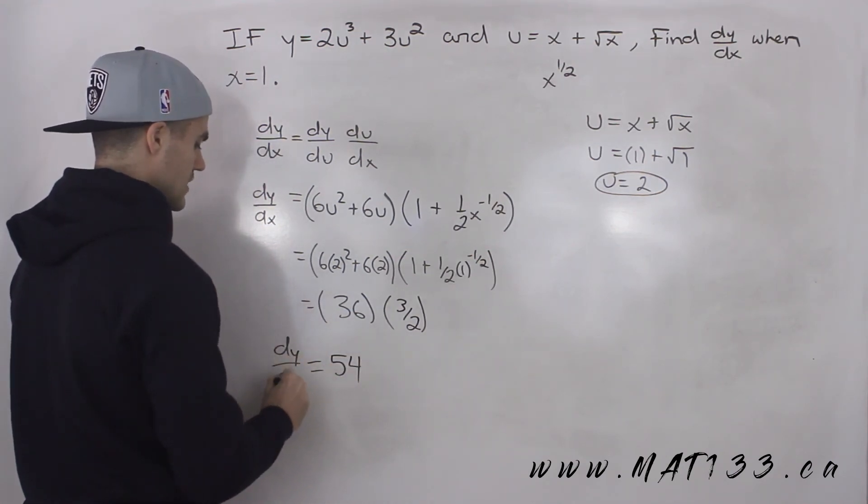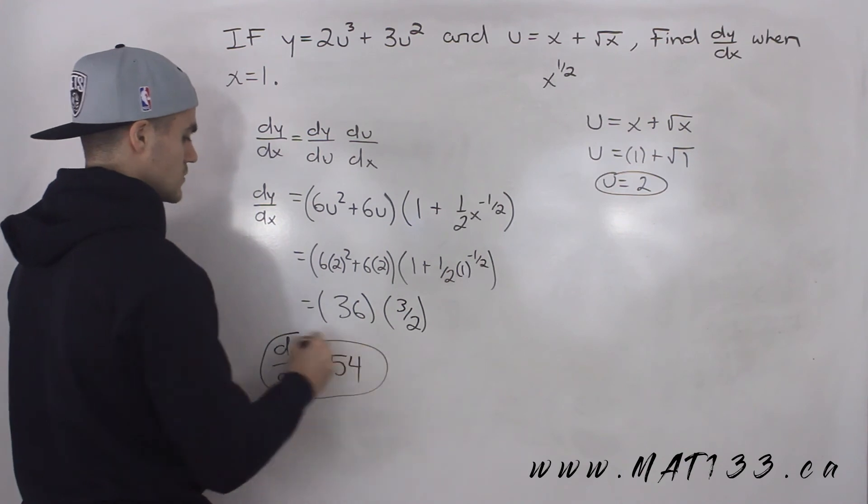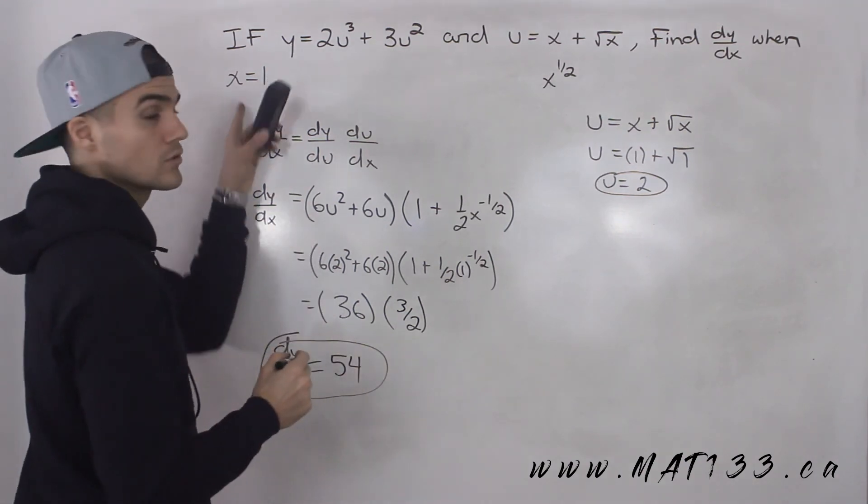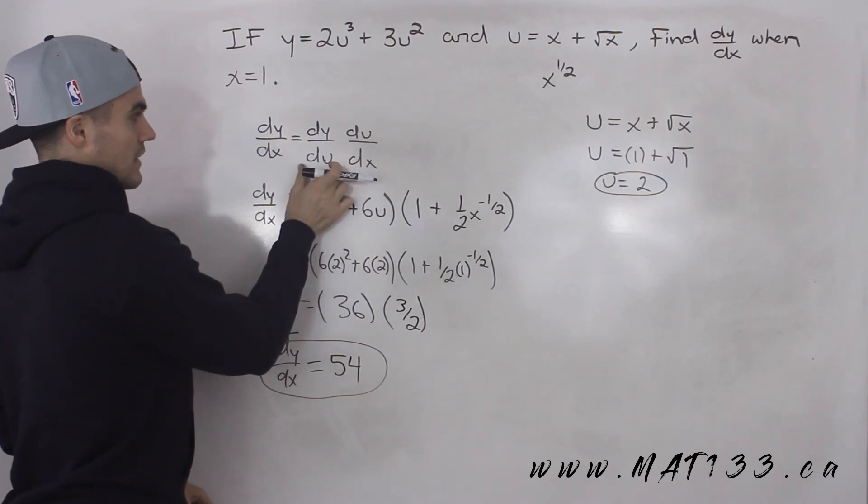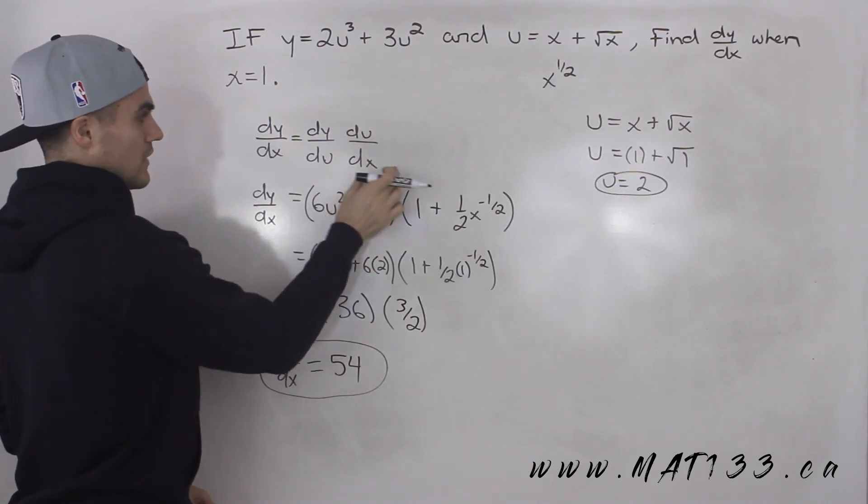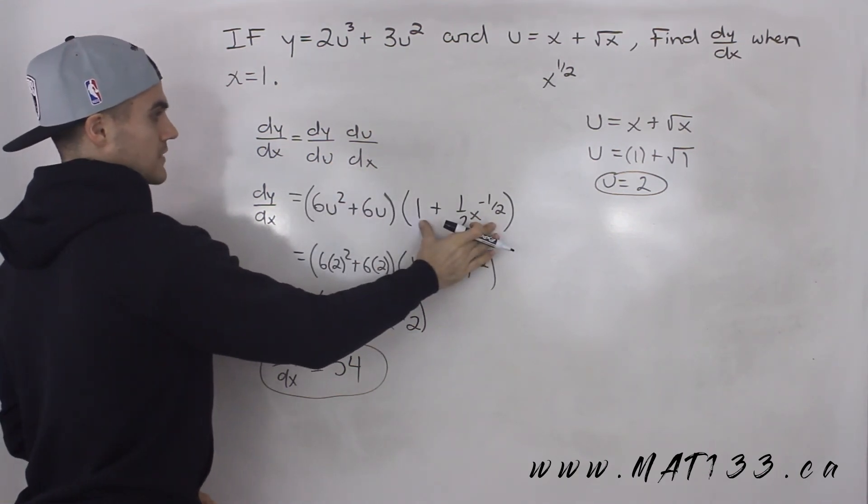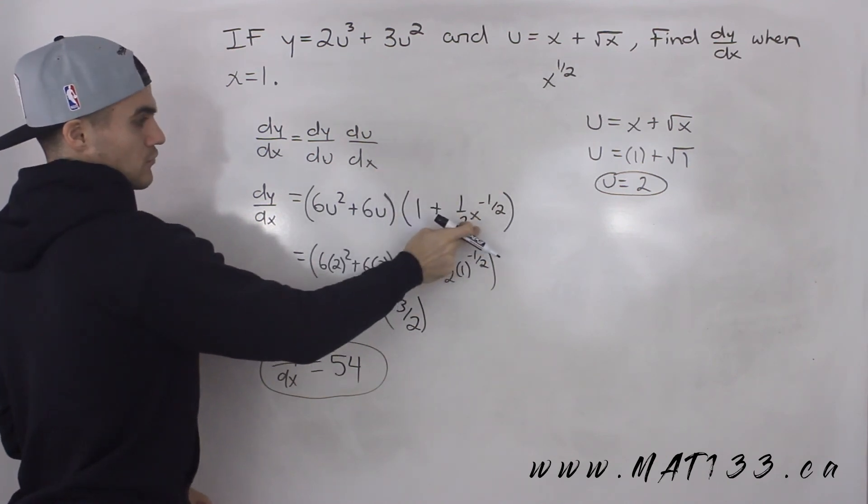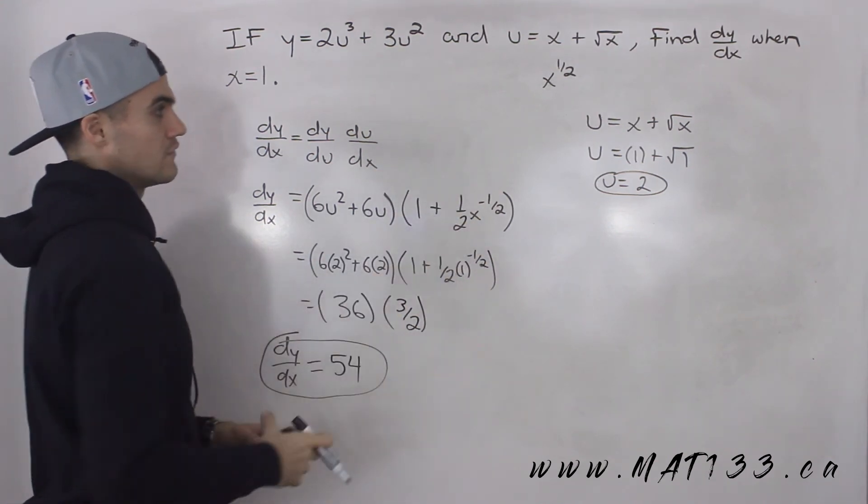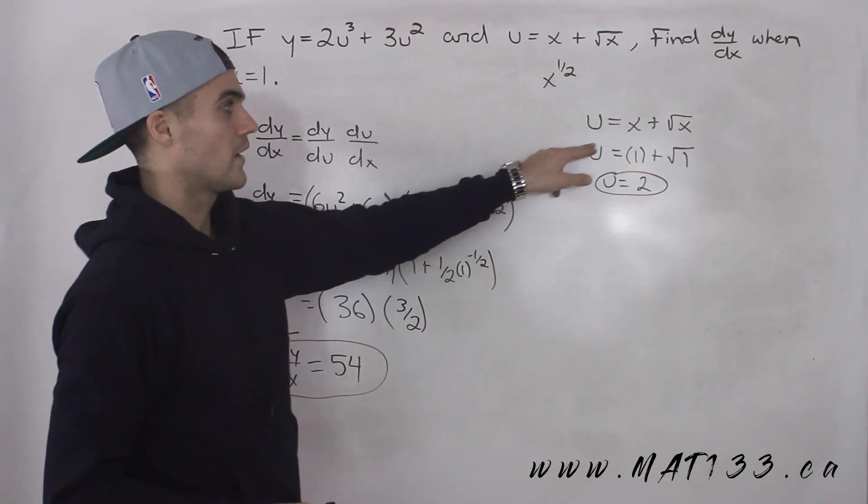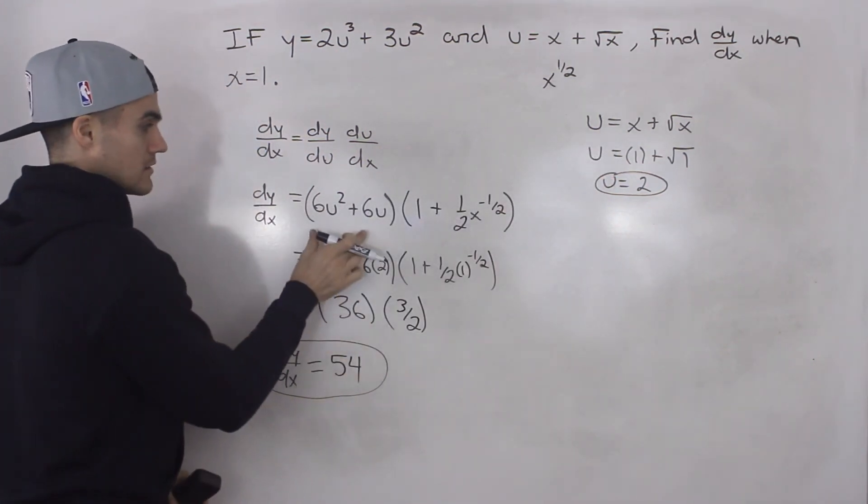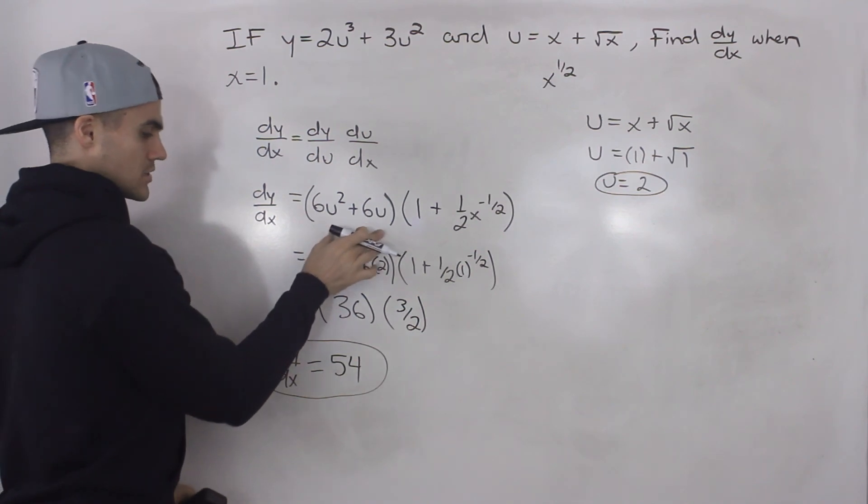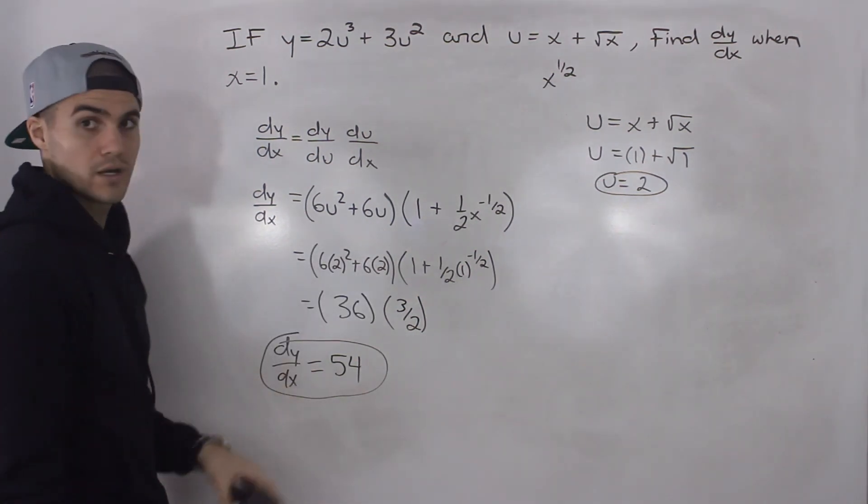And that's our final answer. That's dy by dx when x is equal to 1. So you use Leibniz notation here, find the derivative of y in terms of u, find the derivative of u in terms of x, sub in an x value of 1 into this expression, find what the u value would be when the x value is 1, and then sub in that u value into this expression. Do all the math, you end up getting 54.